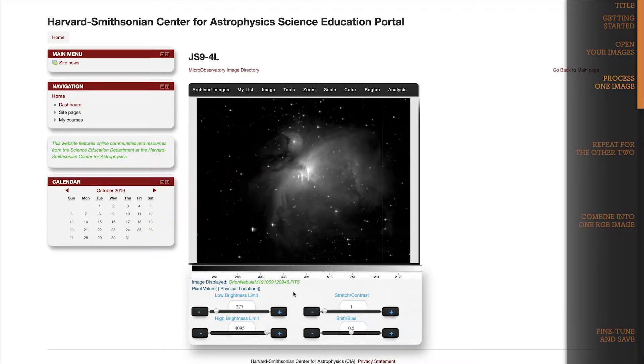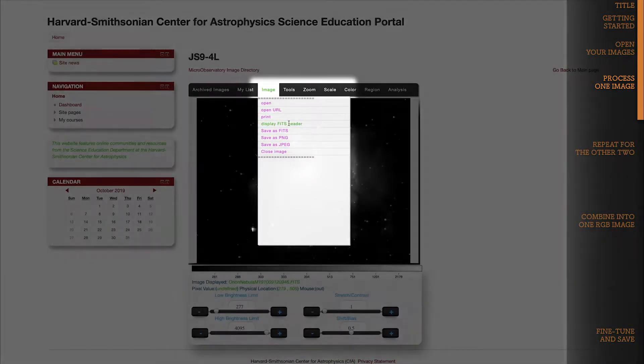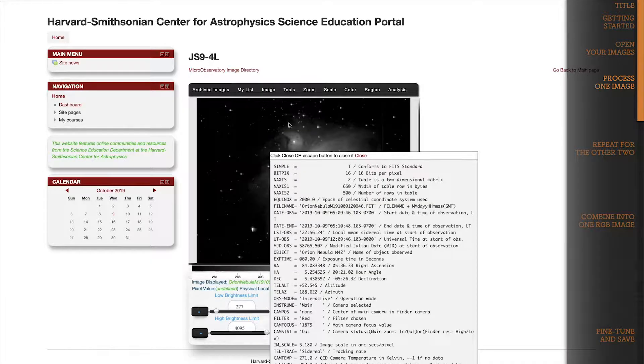Okay, the third step is one you maybe haven't seen before. We need to color the image, and the color we choose needs to be based on the filter that we used to take this image. So how do I know what filter was used? Check the FITS header, that's how. To open the FITS header, go to the Image dropdown and select Display FITS header. The FITS header always has a lot of useful information, including the filter used to take the image.